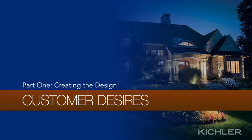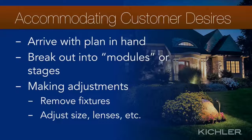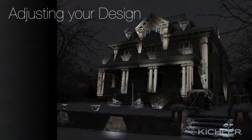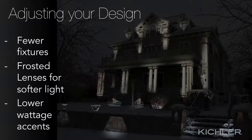The final portion of Part One is about tailoring your recommendation to the customer's needs and desires. It's a good idea to break the design into modules so you can easily remove blocks of fixtures or eliminate effects the customer doesn't want or can't afford, and to create stages for installation. Adjustments can be made in many ways — you can remove fixtures, adjust fixture sizes or lenses, relocate or add fixtures, change beam spreads, or alter the placement of light — all without significant impact to the overall plan.